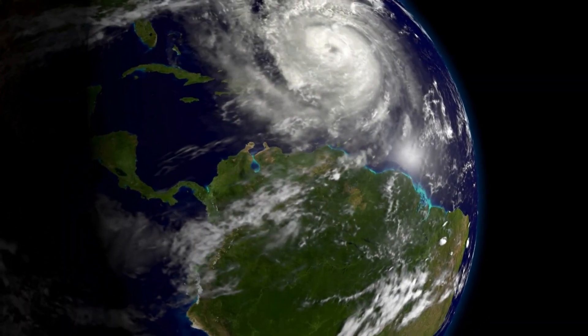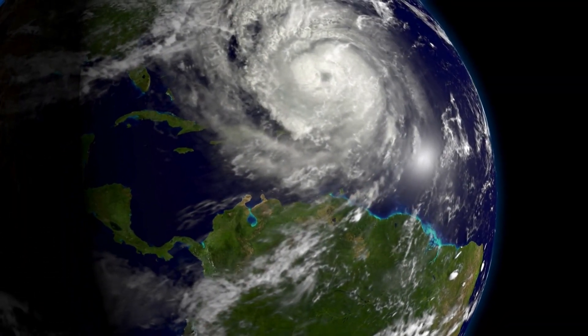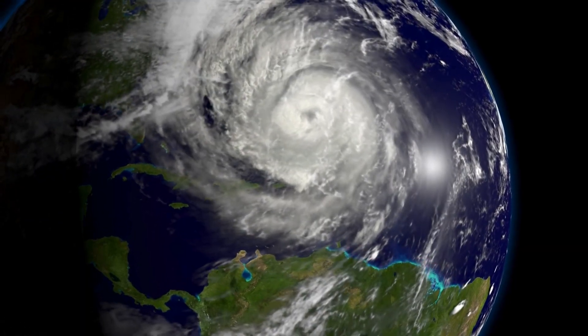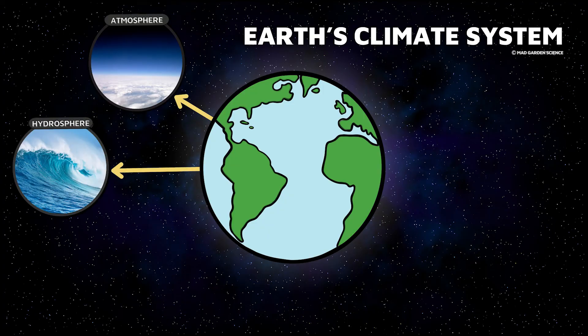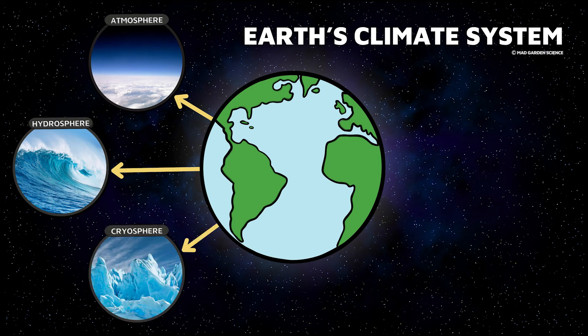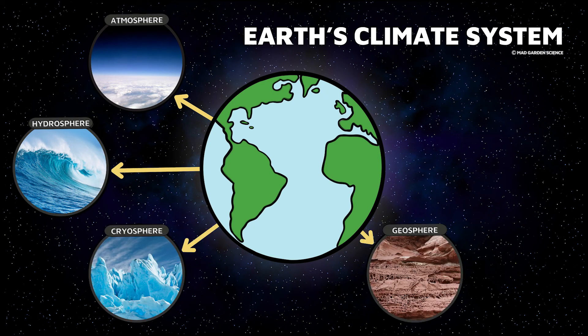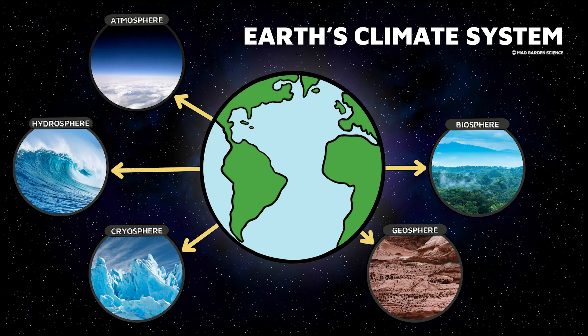In order to understand these different climates, we need to get a better look at the big picture — all of Earth. Our planet has an incredible climate system. Earth's climate system is a highly complex global system consisting of five major components: the atmosphere, the oceans and the cryosphere, the land surface and the geosphere, living organisms in the biosphere, and the complex interactions between them.